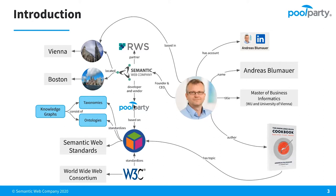The PoolParty Semantic Suite is based on Semantic Web Standards provided by the World Wide Web Consortium, also called W3C. Those standards standardize ontologies and taxonomies, which are a typical part of knowledge graphs. There's also a book you could make use of to learn more about Semantic Web Standards and knowledge graphs, which is the Knowledge Graph Cookbook. I'm the author of that book, together with my colleague Helmut Nagy. We wrote the book in 2020 and in April it was published — you can benefit from it to learn how to use knowledge graphs in practice.